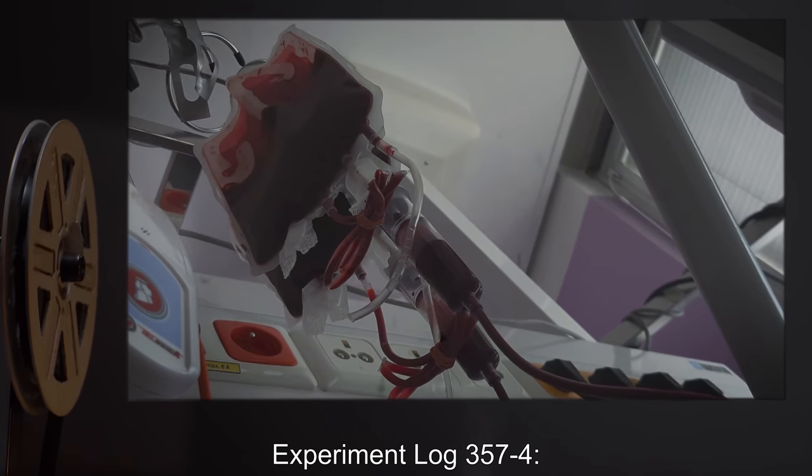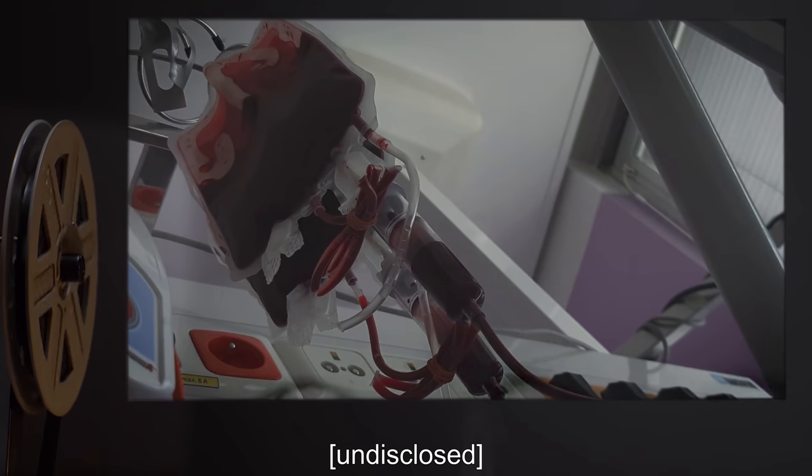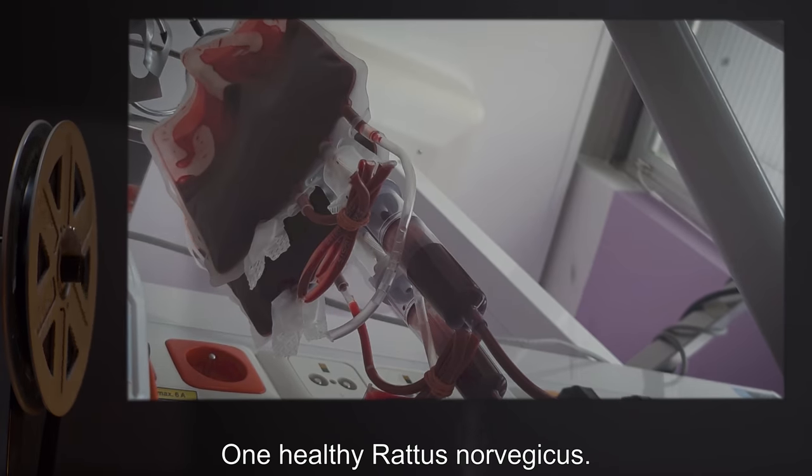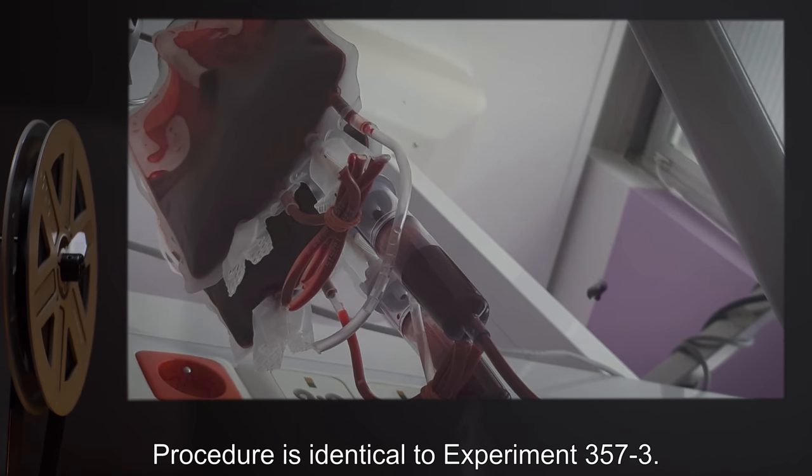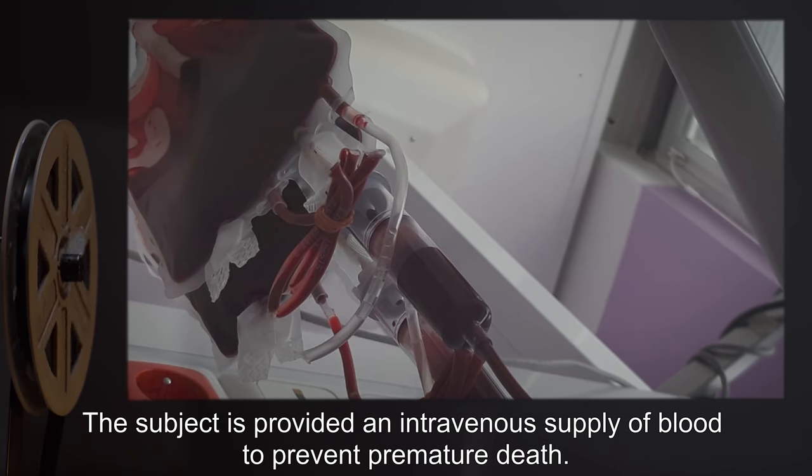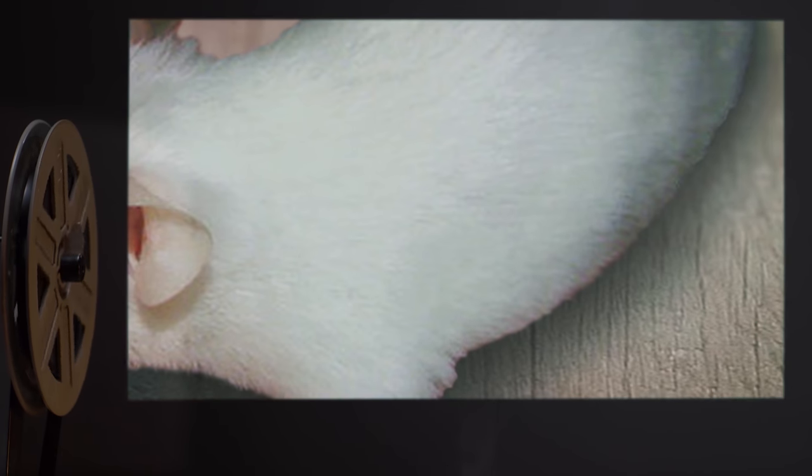Experiment Log 357-4. Date: Undisclosed. Subject: One healthy Rattus norvegicus. Procedure is identical to Experiment 357-3. The subject is provided an intravenous supply of blood to prevent premature death.